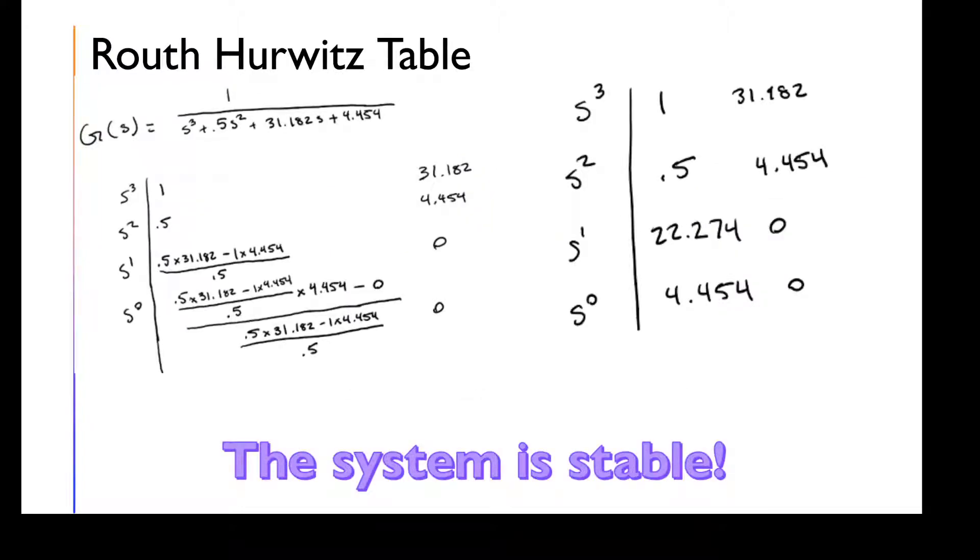Using the Routh-Hurwitz table, we can see that the system is stable based on no negatives.